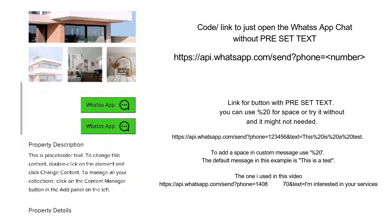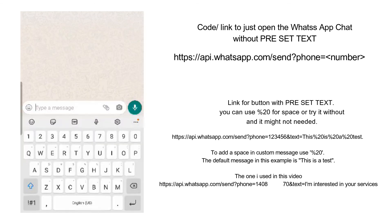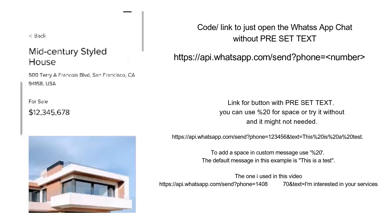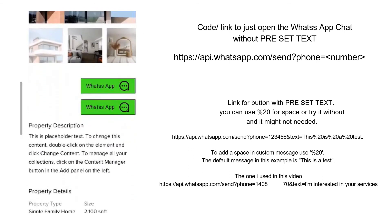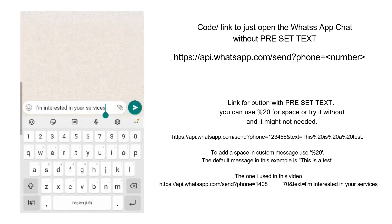Let me show you what it looks like on a cell phone. Once you've added the two buttons, it should look like this on your mobile device. There are two different buttons. Testing the first one — it opens directly to the chat so they can start typing a message. The second button, the one with the pre-filled message, opens WhatsApp and automatically adds the message at the bottom. All they have to do is click send. If you have any other questions, just let me know.